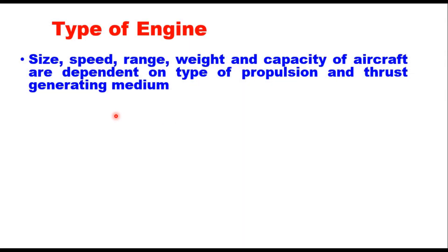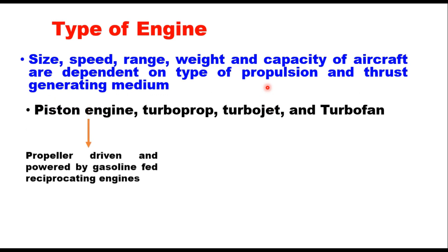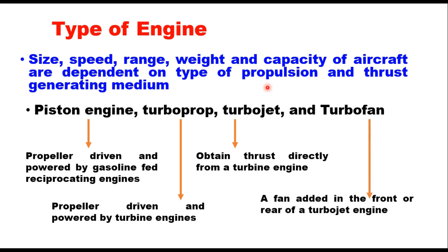First is type of engine. Size, speed, range, weight and capacity of aircraft are dependent on type of propulsion and thrust generating medium. It is either piston engine, turboprop, turbojet or turbofan. Piston engine aircraft is propeller driven and powered by gasoline-fed reciprocating engines. Turboprop is also propeller driven and powered by turbine engines. Turbojet obtains thrust directly from a turbine engine, and in the case of turbofan, a fan is added in the front or rear of a turbojet engine.